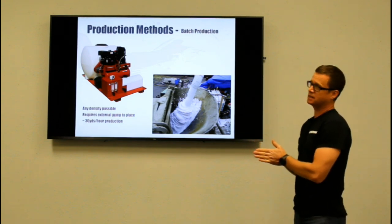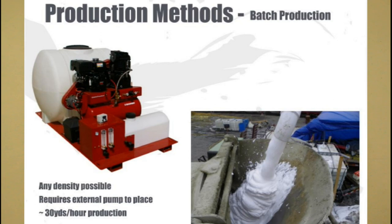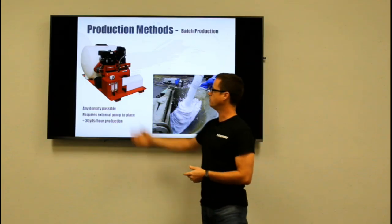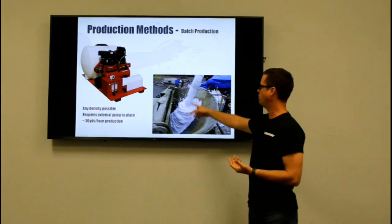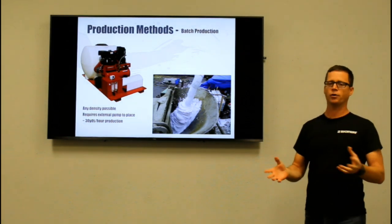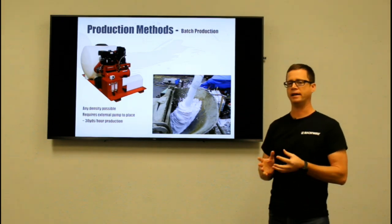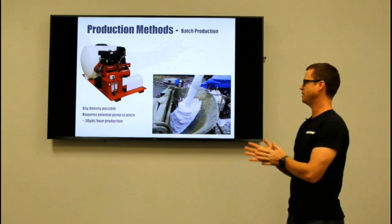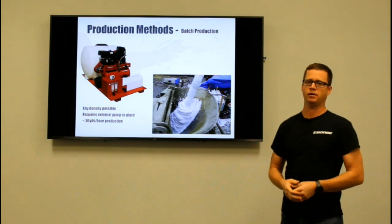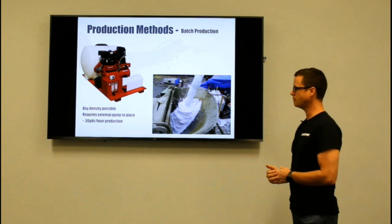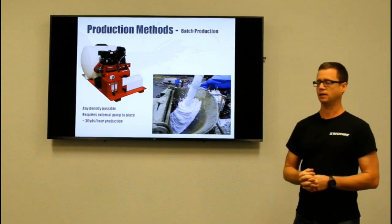Production methods — there are two production methods: the batch production method and the continuous production method. The batch method is the simpler of the two. You just require a foam generator and you batch foam into a ready mix truck or any type of mixer you have. With this method any density is possible — it's just a function of how much foam you add. The disadvantage is that cellular concrete does require pumping to the point of placement, so you would also need a pump after mixing. With our CFVT-20C you can achieve about 30 yards an hour of production capacity.